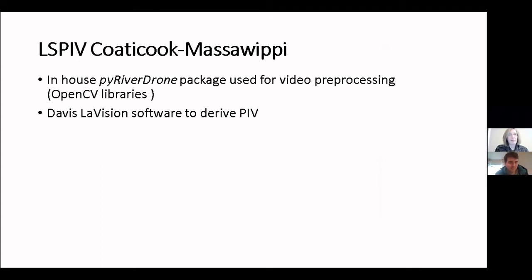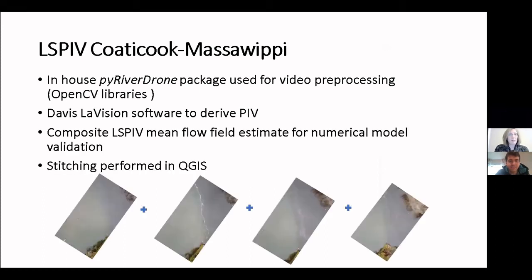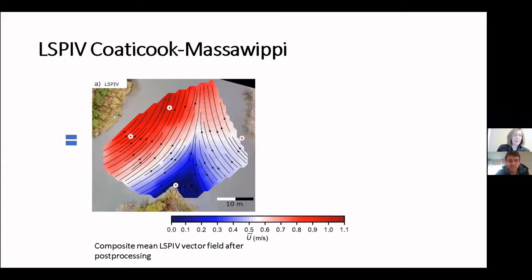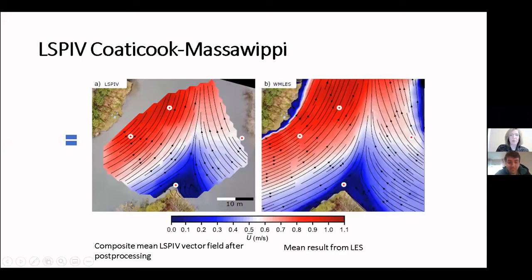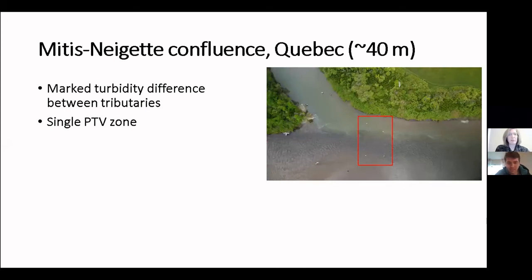Processing was done with an in-house Python package — Jason would be better placed to explain that — and Davis PIV software to derive PIV results. Different drone videos were composited: the mean flow estimate from LSPIV was stitched in QGIS, resulting in the mean large-scale PIV image. The idea was to validate the numerical model — the mean result of the Large Eddy Simulation — and we're quite happy showing that the model works well, capable of reproducing the stagnation zone, acceleration, and other features.